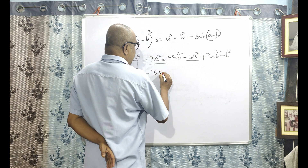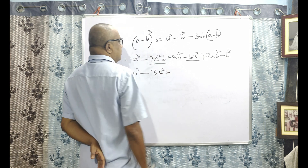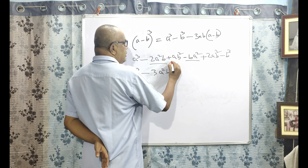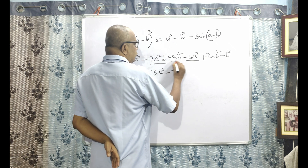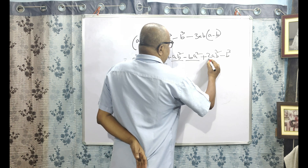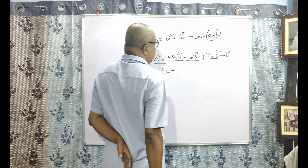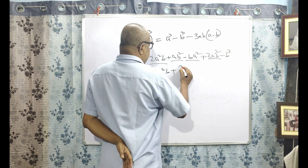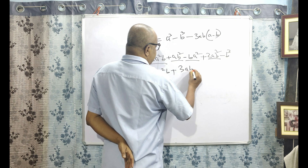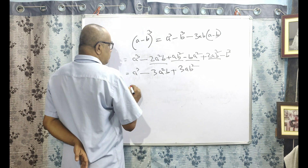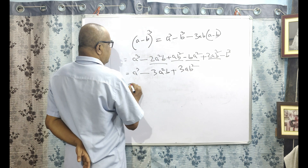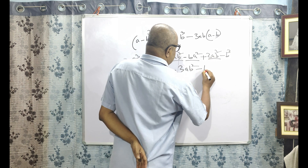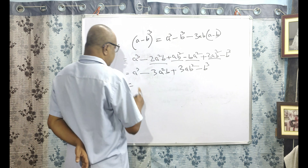Collecting like terms: minus A square B, plus AB square plus 2AB square gives 3AB square. And again minus B cube.